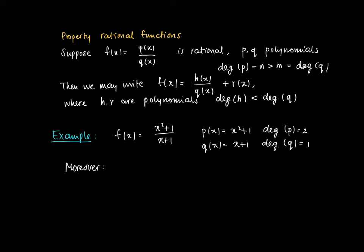So we may reduce f according to the property. We may write f(x) as a zero degree polynomial divided by a first degree polynomial plus some other polynomial. In this case the polynomial h is given by 2. We write f(x) as 2 divided by x plus 1, plus x minus 1. So r is the linear function x minus 1.